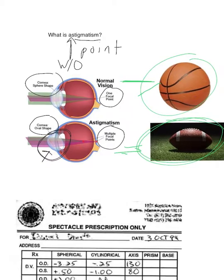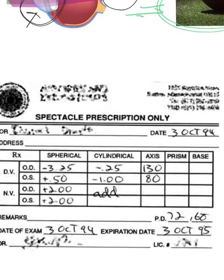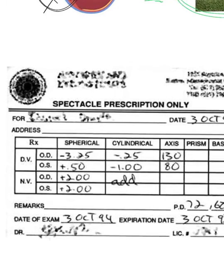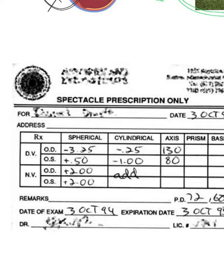Let's look at a prescription. Under DV — distance vision — and OD, which means right eye, you can see three numbers. Same thing with the left eye, OS. If you see three numbers, you know you have astigmatism.